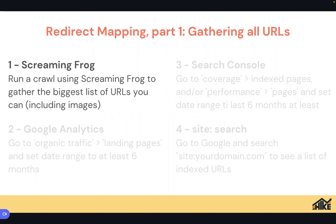Getting a full URL list is the difficult part, especially for large e-commerce sites — which is why the four-to-six-week rule matters. First, use Screaming Frog. It might sound strange if you've never heard of it — it's an SEO tool used by experts. You put in your URL, it crawls your website and brings back all your URLs.